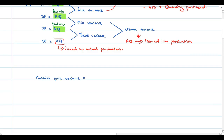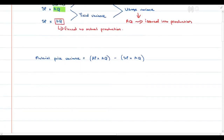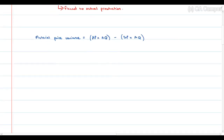Let's start with calculations. First, we calculate the material price variance. You pull the formula from the framework above — no need to rewrite it. We need to perform this calculation for both types of raw material: cookie dough and chocolate chips. We need the actual price multiplied by the actual quantity, and that is the actual quantity purchased, not the actual quantity issued into production.